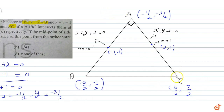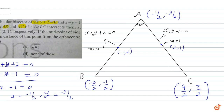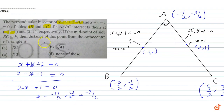यहाँ पर mistake है — 2 चाहिए था, तो -1/2 + x = 4, जिससे x = 9/2 आना चाहिए। So C = (9/2, 7/2). हमसे पूछा गया है distance from the orthocenter, और right angle triangle में orthocenter वो angle होता है जहाँ 90° बनता है। Point P is the midpoint of side BC.